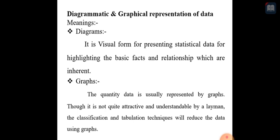A diagram can be a curve, broken line, or a series of bars representing various kinds of quantities, information, and relationships such as successive changes in variable quantities. So a diagram is the visual form of presenting statistical data — that is numerical data — highlighting basic facts and conclusions.